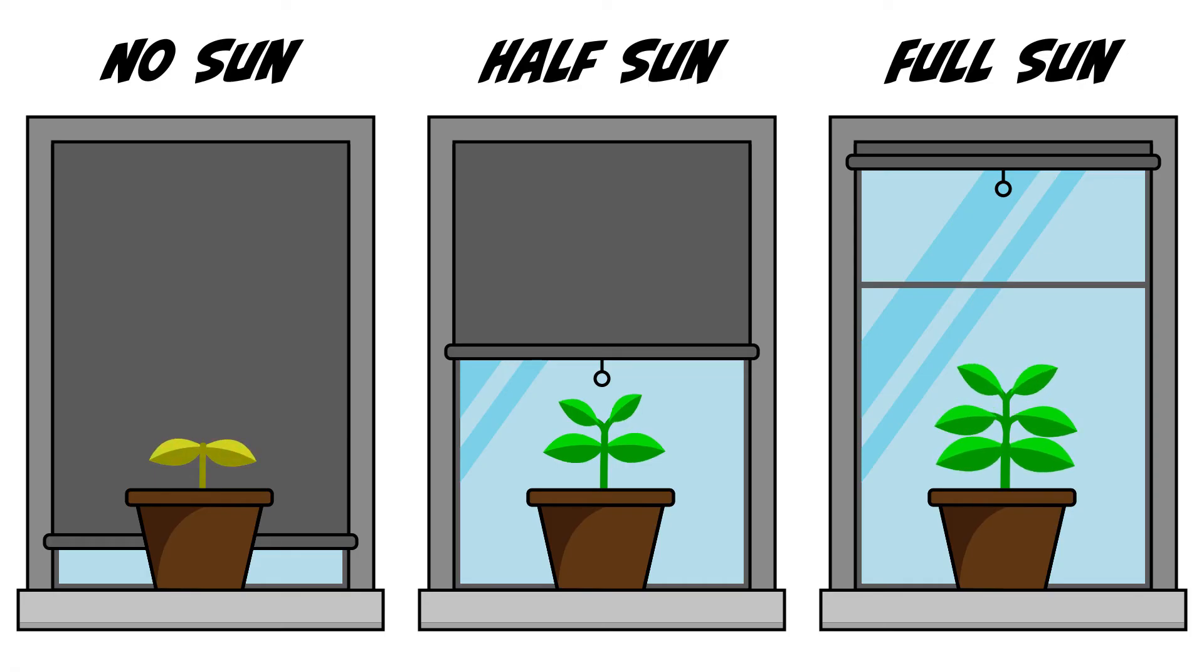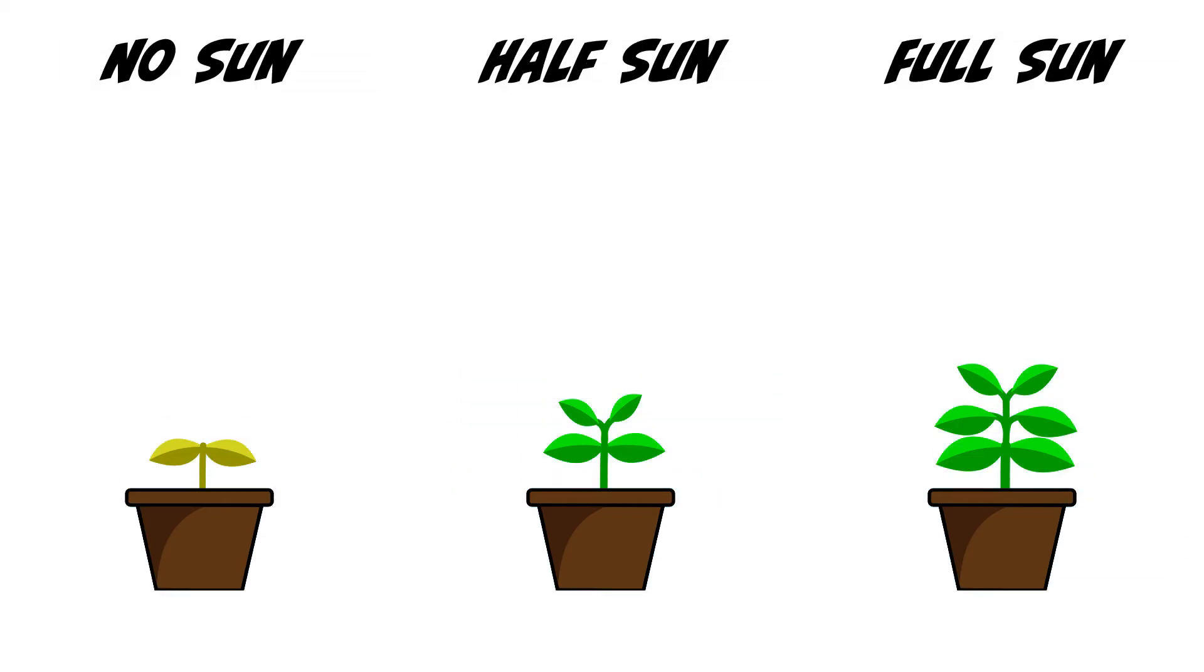Now that our experiment has run its course, let's observe what happened. In our no-sun case, we observe a plant that has turned a deep yellow. The plant has two leaves and is five centimeters tall.